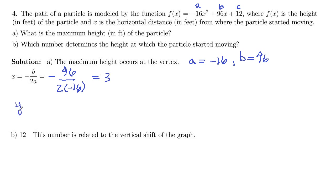And then the y-coordinate, we'll just take that x equal 3 and plug it back in the original equation. So we'll have negative 16 times 3 squared plus 96 times 3, and then plus 12. And if you plug that in the calculator you will get 156 feet.